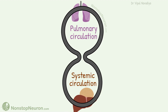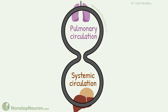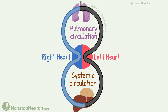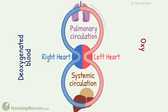A slight modification in this will take it one step closer to how we usually draw it. In this shape, we can understand some more detail. We can clearly distinguish the right heart and the left heart. The right side of the circuit contains deoxygenated blood and the left side contains oxygenated blood.